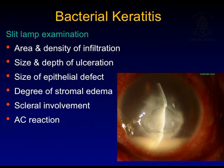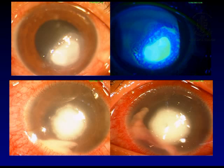A careful slit lamp examination is mandatory in cases of bacterial keratitis. This highlights the fact that the size of the infiltrate is actually different from the size of the epithelial defect — the epithelial defect is much smaller than the infiltrate. The bottom slides show that when you change the position of the patient, the hypopyon moves in cases where it is mobile.